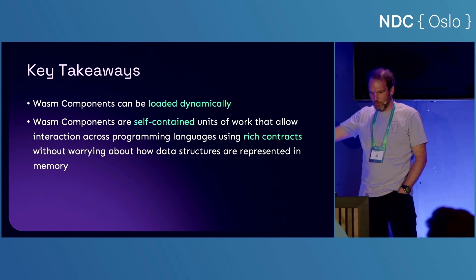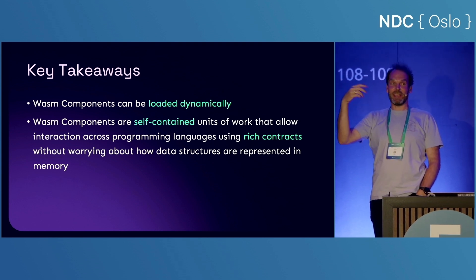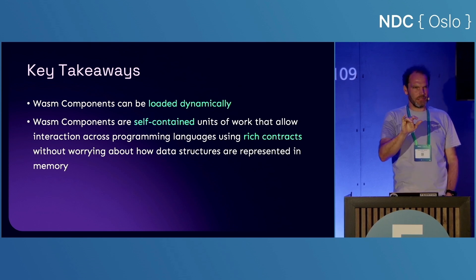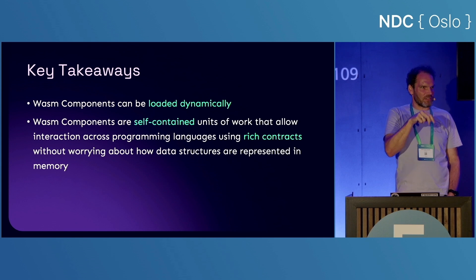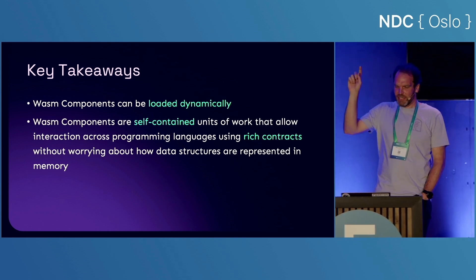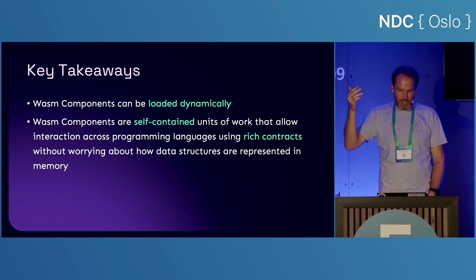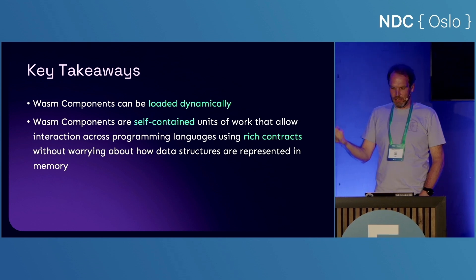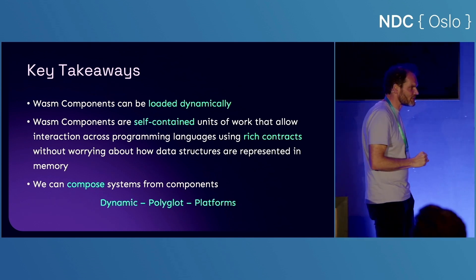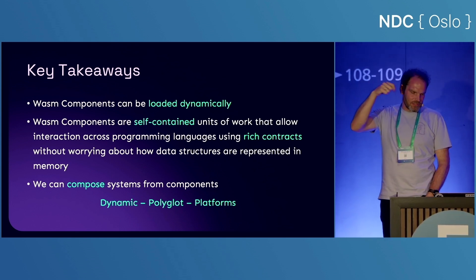Key takeaways: WebAssembly/Wasm components can be loaded dynamically. They are self-contained units of work and actually really, really small — a Rust component implementing a function is around 19 kilobytes, so distributing them in infrastructure is fairly cheap. They allow interaction across programming languages using rich contracts without worrying about how data structures are represented in memory. They are portable and we can compose systems from components. The three keywords attached to this are: dynamic, polyglot, and platform-building.